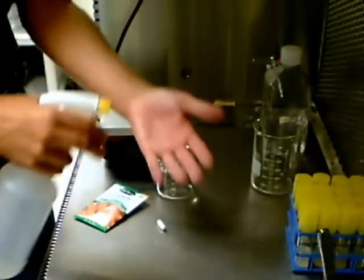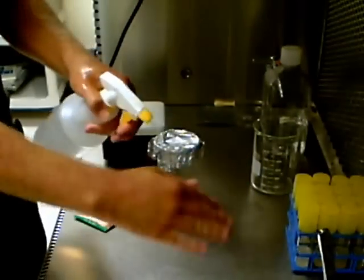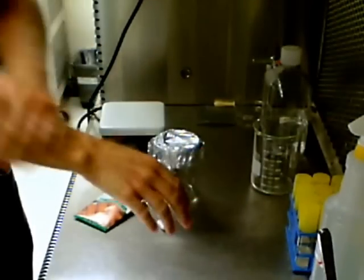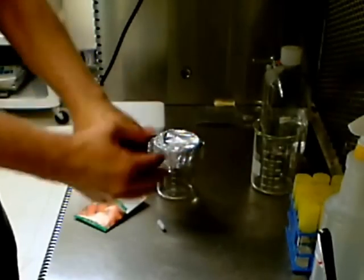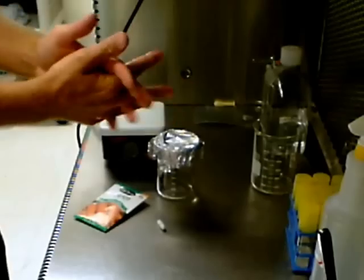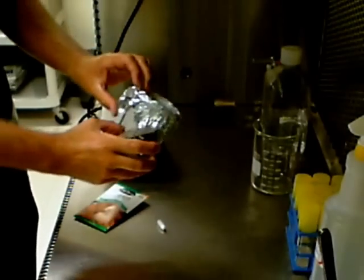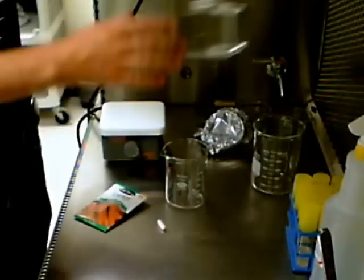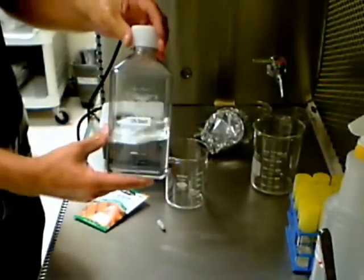The first step is to surface sterilize the seeds using a 10 percent solution of bleach and a drop of detergent. Begin by washing your hands and spraying them with a 70 percent solution of ethanol. Add about 200 milliliters of the bleach solution to a beaker along with a drop of detergent and the stirring bar.